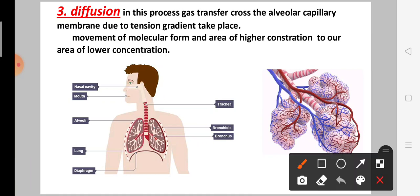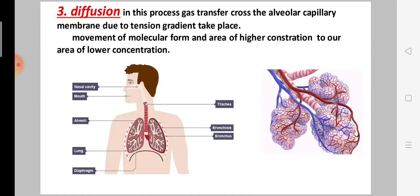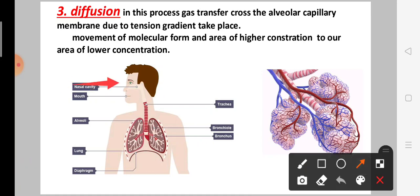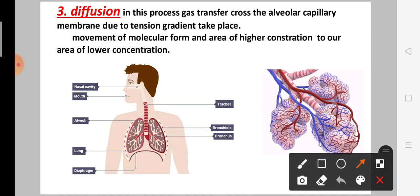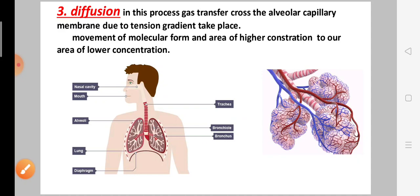As you can see, oxygenated air inhaled through the nose and mouth travels to the trachea, then to the lungs. From the lungs, oxygen passes through the alveoli into the blood vessels. This process is called diffusion.